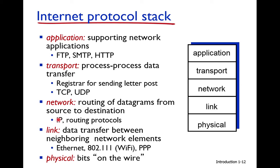The link layer is responsible for moving data from one node to another node — from one end of a link to the next. There are different link layer protocols available, for example Ethernet, 802.11 Wi-Fi, and point-to-point protocol.